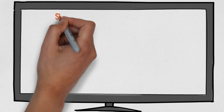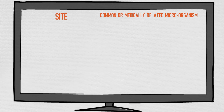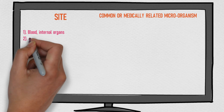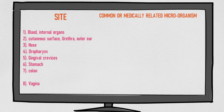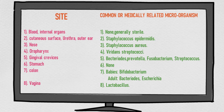Now let's discuss some sites where respective organisms are found as their normal habitat. Some sites include blood or internal organs, cutaneous surface including urethra and outer ear, nose, oropharynx, gingival area, stomach, colon, and vagina. In blood or internal organs, no normal flora are found because these areas are generally sterile.